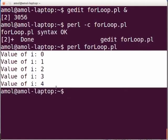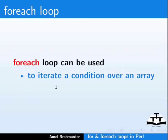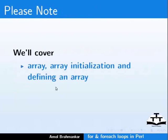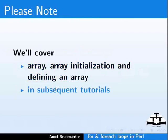Now let us look at foreach loop. If we want to iterate a condition for an array, we can make use of foreach loop. The syntax is: foreach $variable ( @array ) open curly bracket, perform action on each element of an array, press enter, close the curly bracket. Please note, we will cover arrays, array initialization and defining an array in subsequent tutorials.